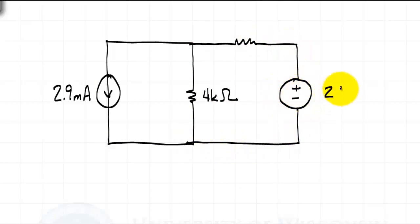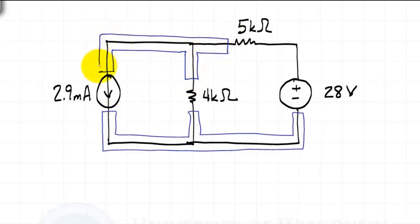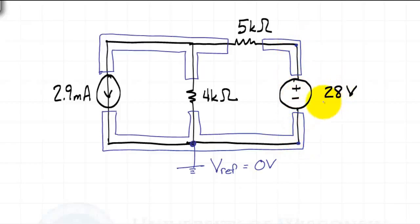I'll begin this problem by outlining the nodes — crossing only at each element and following the wire until I come back to the beginning. This makes it very easy to identify the nodes. Next, I'll select one of these nodes and make it the reference node, which we define as 0 volts. Now normally I'd assign a variable for the voltage at each remaining node. However, in this case I have a 28 volt source connected to the reference node. If this terminal is at 0 volts and the voltage increases by 28 volts from the source, this node must be at 28 volts.